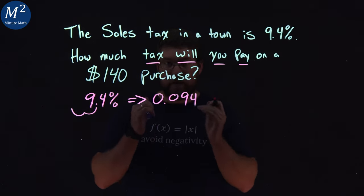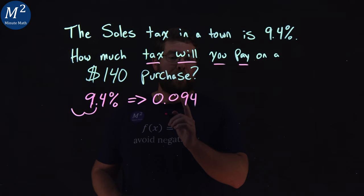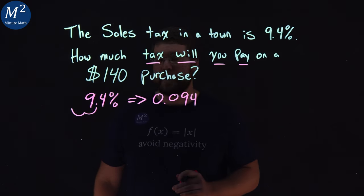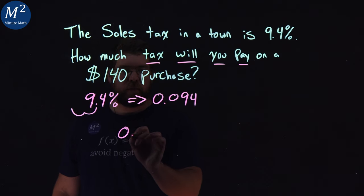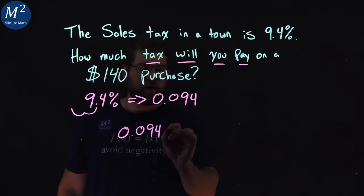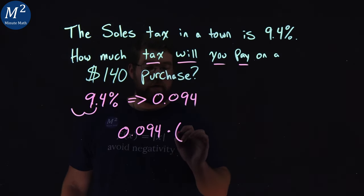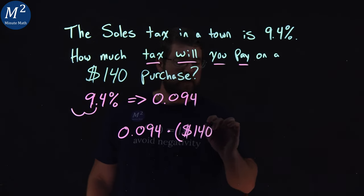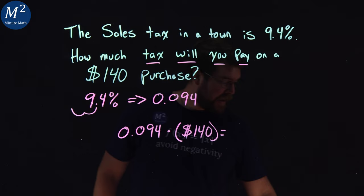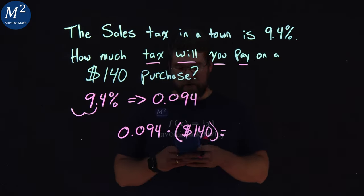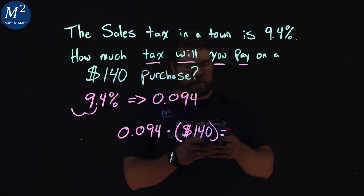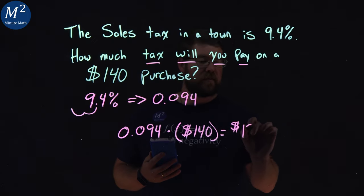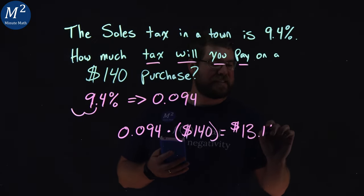Now let's calculate the tax. We need to take that 0.094 and multiply it by $140. So we take 0.094 and multiply that by $140. And that comes out to be — let's just use our calculator here — 0.094 times 140, and we have $13.16.